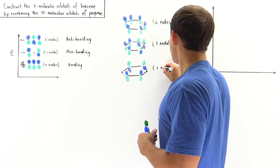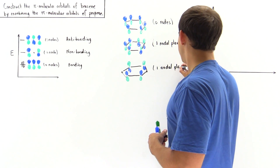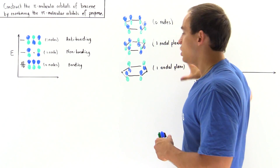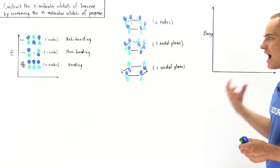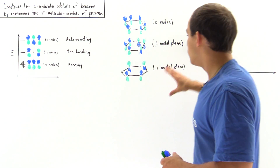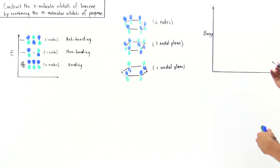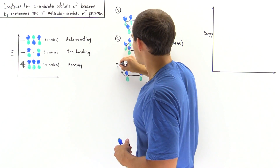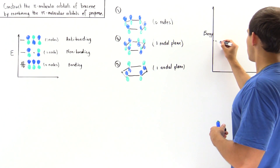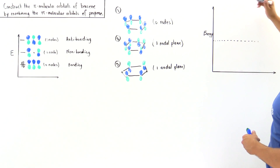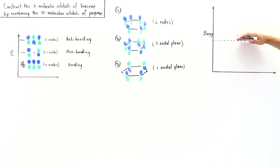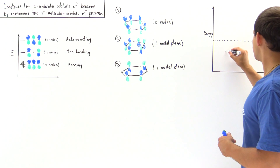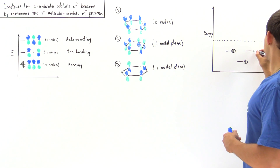These three orbitals — the zero-node orbital and the two one-node orbitals — are all called the bonding pi molecular orbitals, and the electrons will be found within these three orbitals. If we call them number one, number two, and number three, with a dashed line separating bonding below from anti-bonding above, then these three correspond to π1, π2, and π3 respectively.